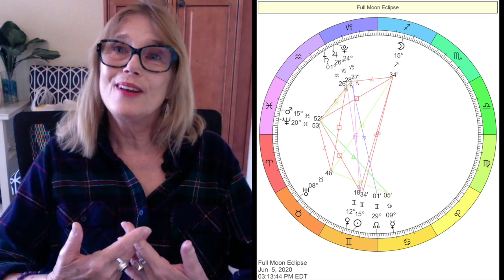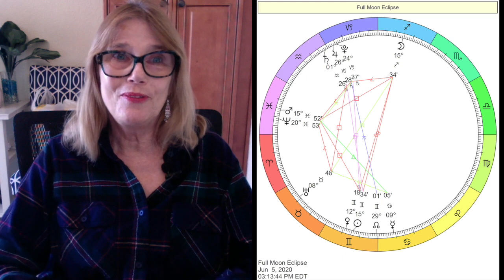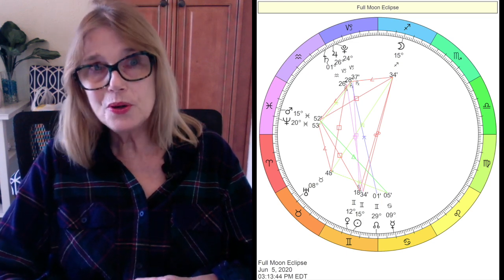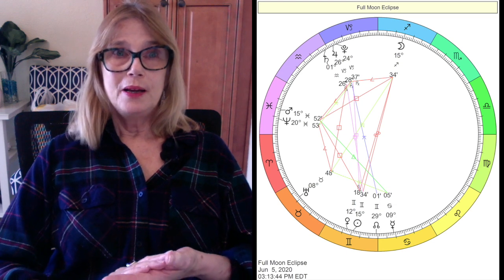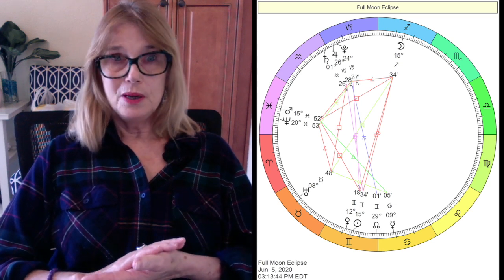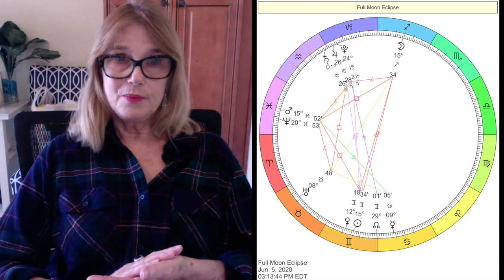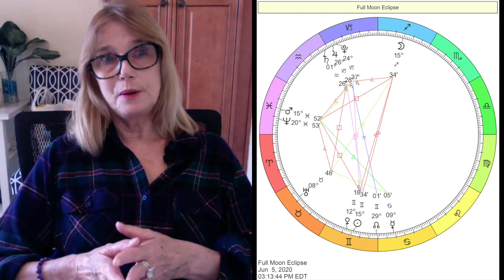When you think of Gemini, you think of information, facts, gathering facts, and talking and communicating. The North Node is 29 degrees Gemini and the South Node is 29 degrees Sagittarius. So that's the eclipse.